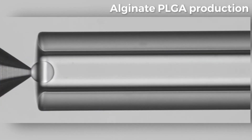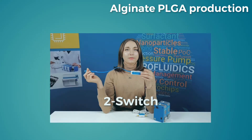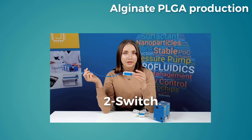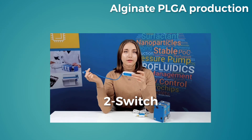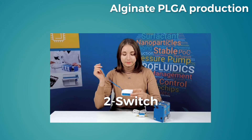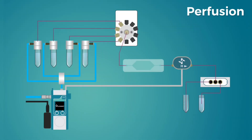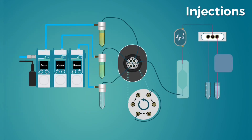You can use SwitchEasy with multiple applications. For example, Alginate PLGA production — as seen in our dedicated video, the use of valves makes automated particle production possible. Perfusion: the rotational valve enables the sequential injection of up to 10 different liquids.